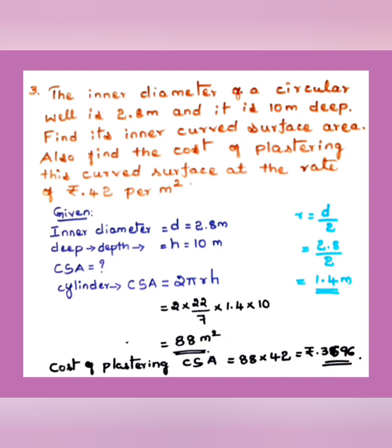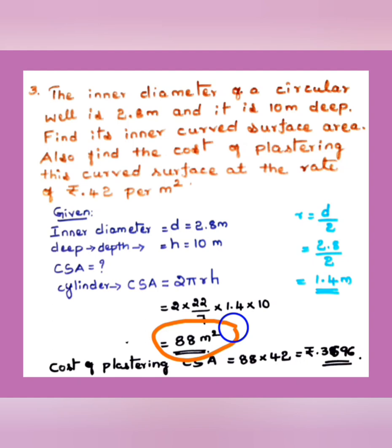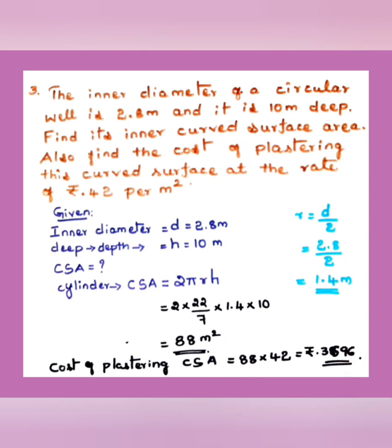You can simplify in whichever method you find easy — cancel possible factors instead of multiplying everything out first. CSA of the cylinder = 88 m². Cost of plastering at ₹42 per m²: 88 × 42 = ₹3696. That is the answer.